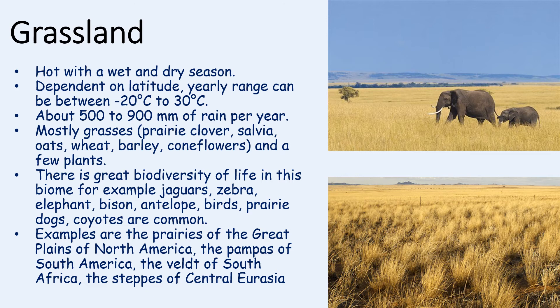Grasslands have a hot and wet climate with dry seasons. Their temperatures can vary between minus 20 degrees Celsius and 30 degrees Celsius and they have about 500 to 900 millimetres of rainfall per year. Grasslands are wide open land with low growing plants consisting mostly of grasses. Many herbivores eat the grasses — for example rabbits and zebras. There is a great biodiversity of life in this biome, with animals such as jaguars, elephants, mice, snakes, birds, bison, antelopes, prairie dogs and coyotes.